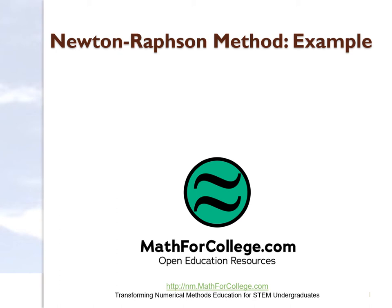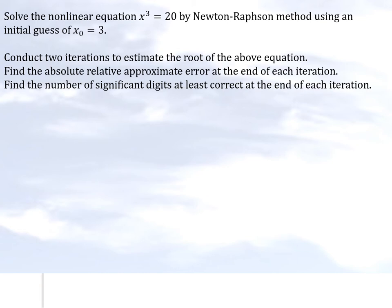In this segment, we will take a nonlinear equation and solve it by the numerical method called Newton-Raphson method. In this example, we are given x cubed equals 20 as the nonlinear equation with the initial guess of x naught equal to 3, and we are going to solve it by Newton-Raphson method.